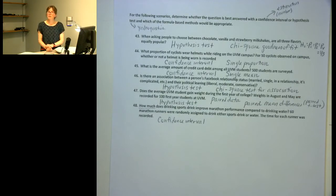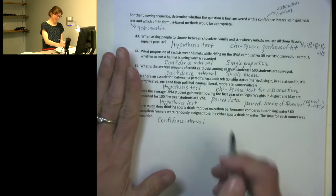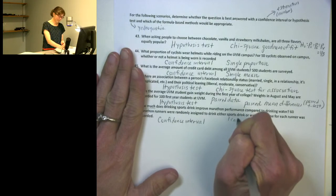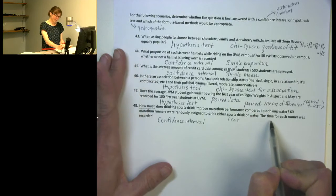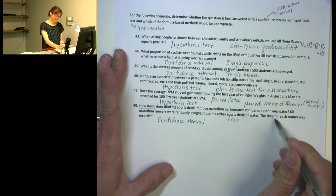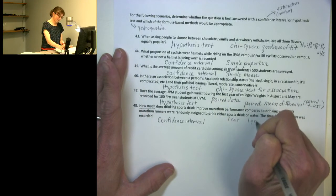And when I think about the types of variables I have here, I have sports drink or water as my explanatory variable. So that is one categorical. And then I've got the time to finish the marathon, so that would be one quantitative variable.